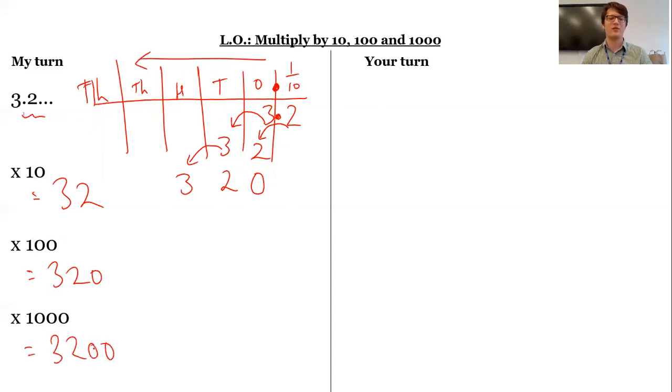So I'm going to get 3,200. Now I can move another column along to times by 1,000. My ones have gone to the thousands. My tenths have gone to the hundreds. Now I need a placeholder in the tens and the ones.